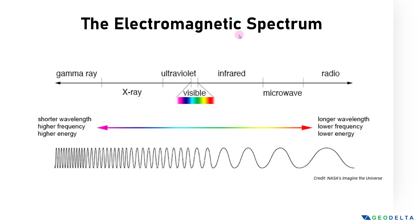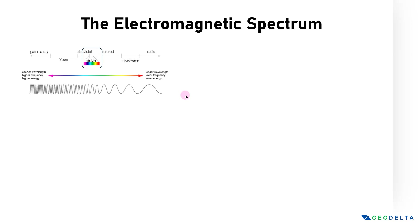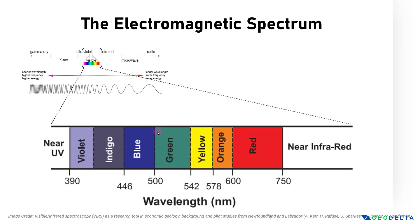Before we get to that, let's have a quick look at the electromagnetic spectrum. On the left-hand side, we have electromagnetic waves with high energy and high frequency but shorter wavelengths, such as gamma rays. On the right-hand side, we have waves like microwaves and radio waves, which have longer wavelengths but lower frequency and lower energy. Right around here we have the visible spectrum — the range of wavelengths that we as humans can see. If we zoom into this part of the spectrum, we get an expanded view of the visible spectrum showing individual colors and their corresponding wavelength ranges in nanometers.